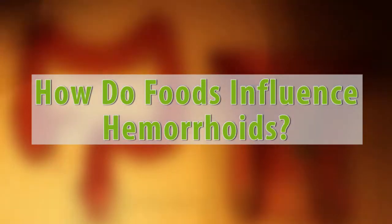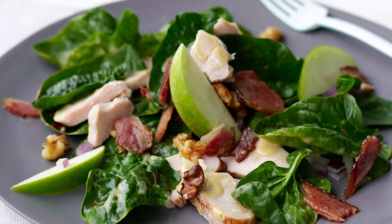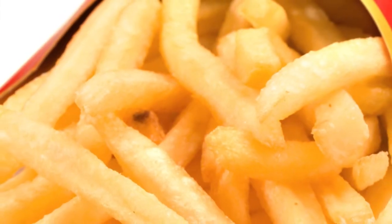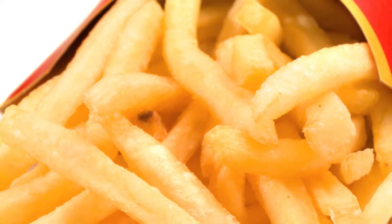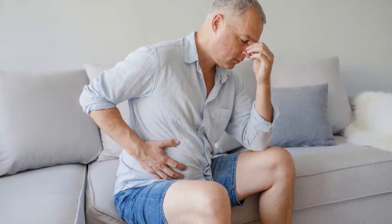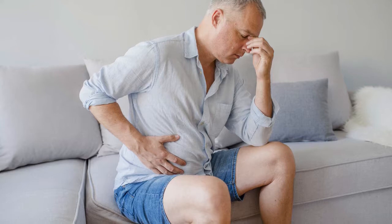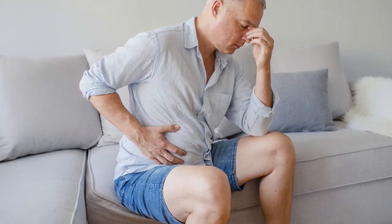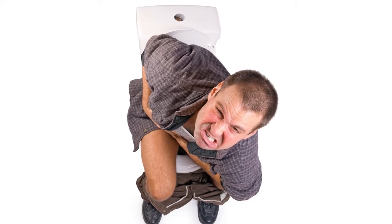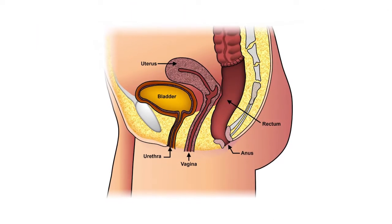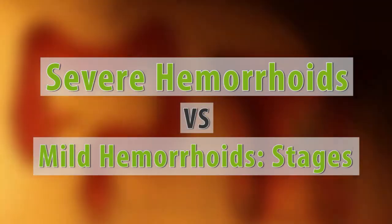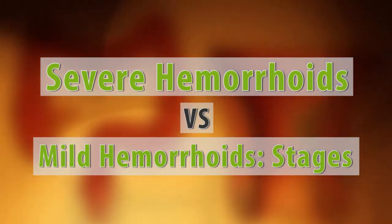Other causes include eating a low-fiber diet, coughing, sneezing, vomiting, and holding your breath while straining to do physical labor. People who consistently eat a high-fiber diet are less likely to get hemorrhoids, while those who prefer a diet high in processed foods face a higher hemorrhoid risk. A low-fiber diet can leave you constipated, promoting straining and producing hard stools that further irritate swollen veins.